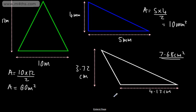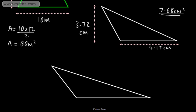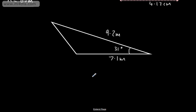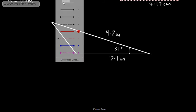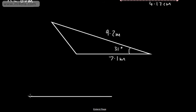What we're going to look at now is finding the area of a triangle when we don't have a perpendicular height. We might be given a scalene triangle with an angle — say this angle is 31 degrees, this base is 7.1 meters, and this length is 9.2 meters. We want to find the area of this triangle where we don't have a perpendicular height, so let's draw a triangle below to see where the formula comes from.